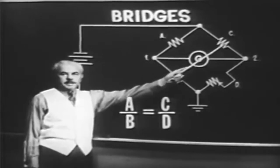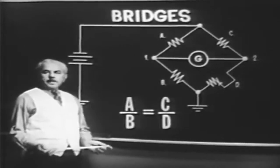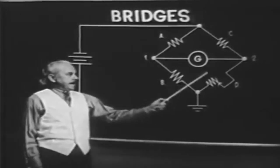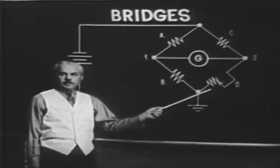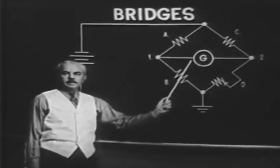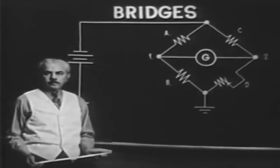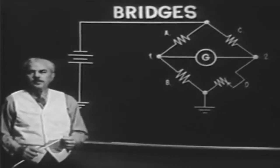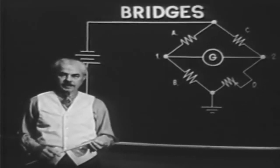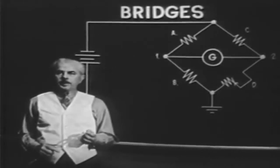Also, in a balanced condition, A over B is equal to C over D, and this ratio is true for both voltage and resistance. When out of balance, one variable resistor can control both the direction of current and the quantity of current through the detector.